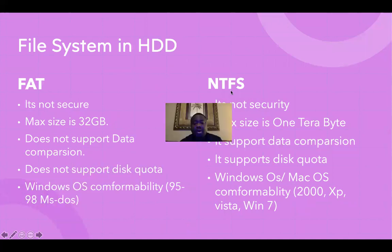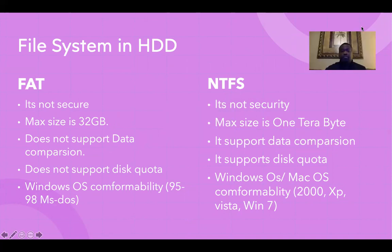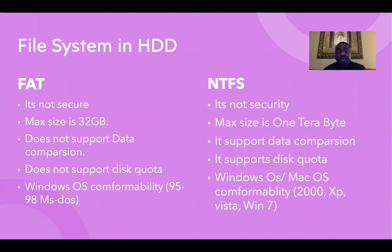Now the file systems in the hard drive. You have two of them: FAT and NTFS. Macs and Windows run with NTFS. Let's start off with the FAT file system. It's not secure. The max size is about up to 32 gigabytes. It does not support any data compression and it does not support disc quota. Windows OS from around Windows 95 to 98 used this file system.